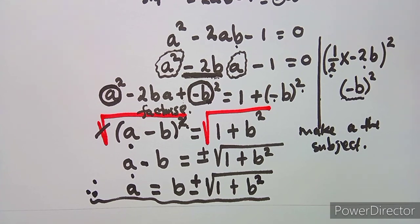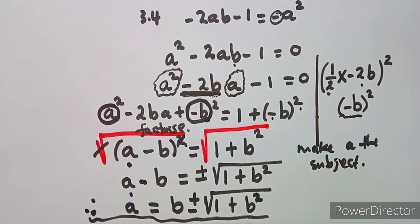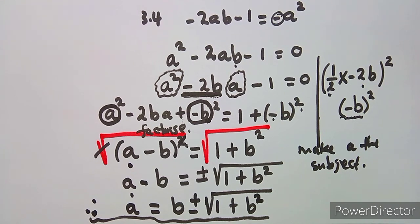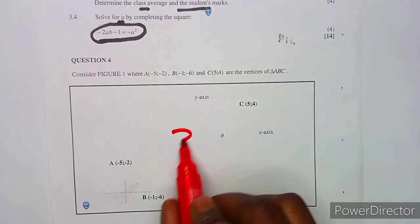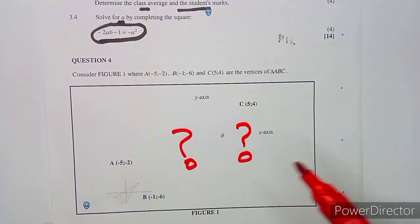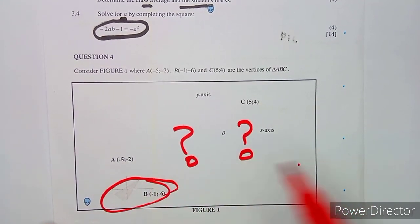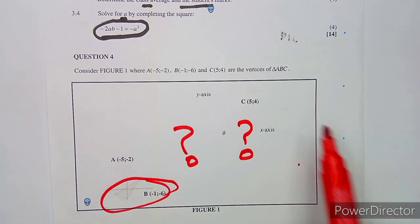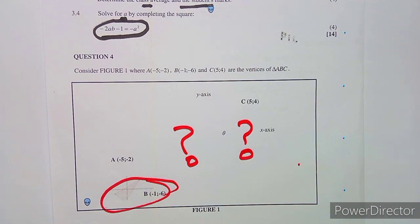Question 4 has a printing issue and cannot be read clearly, so we will skip it and move on to question five in the next class. Make sure you subscribe to the channel, Mason African Motives, so you won't miss any upcoming classes. Until we meet again.